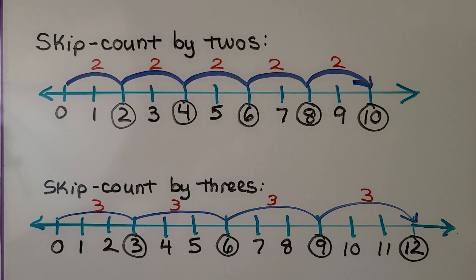When we skip count by threes, we start at zero and say 3, 6, 9, 12. We're skip counting by three and three and three and three.